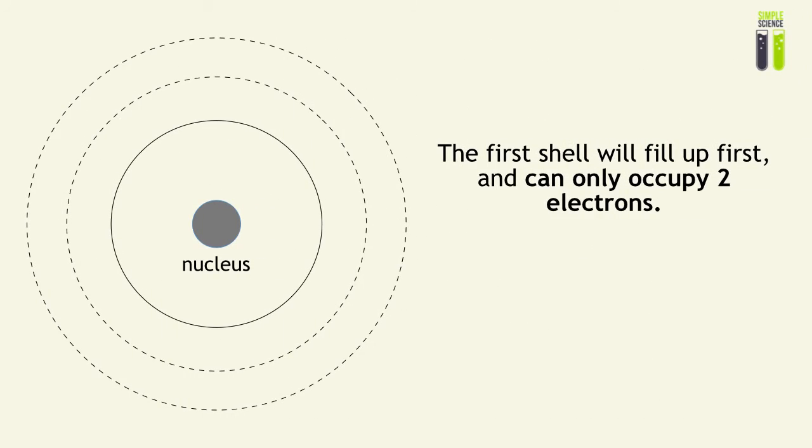So the first thing we have to do is to fill up the first shell. And the first shell can only occupy two electrons. So the first two electrons that you must consider basically fill up the first shell. For example, this is the helium atom with a nucleus and two electrons around it.